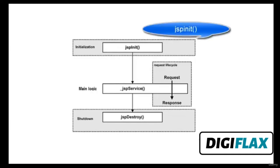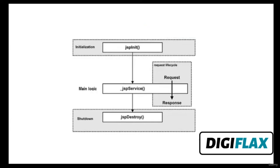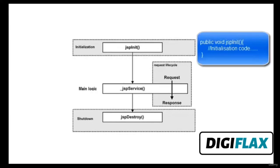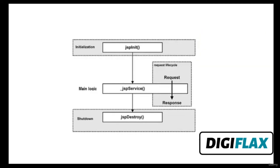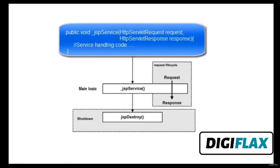This is the JSP lifecycle. There are four steps: first, JSP compilation; second, JSP initialization; third, JSP execution; and fourth, JSP cleanup. The first step is JSP compilation. When a browser asks for a JSP, the JSP engine checks to see whether it needs to compile the page. If the page has never been compiled or if the JSP has been modified after the last compilation, then the JSP engine compiles the page.